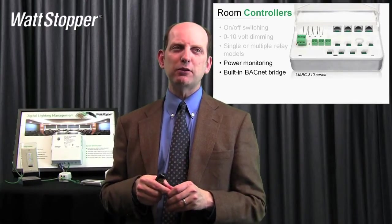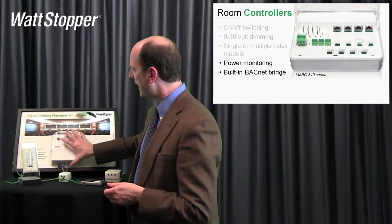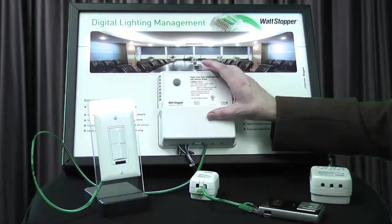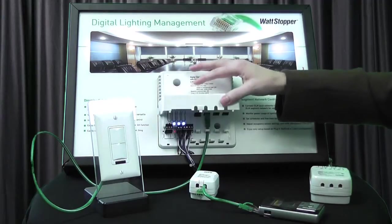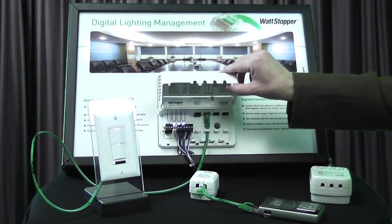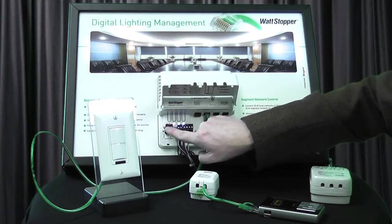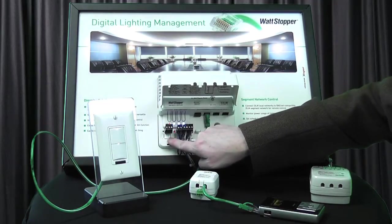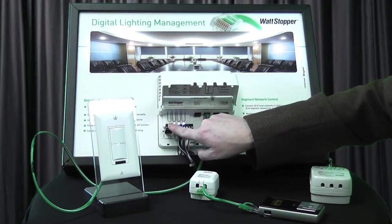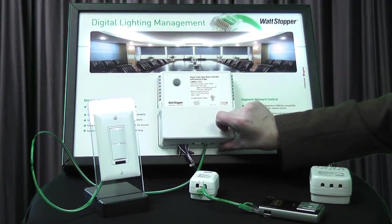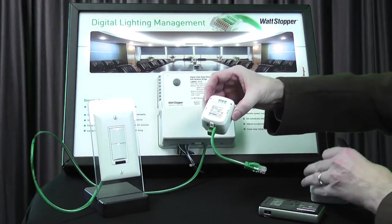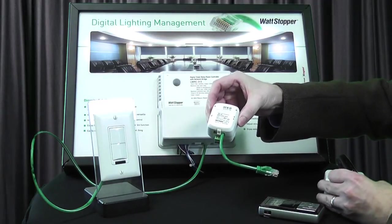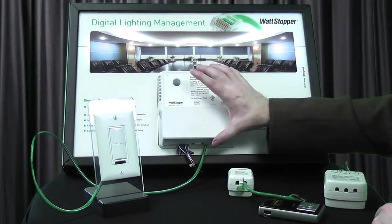Let's now talk a little bit about the room controllers. On the 300 series room controller, we were talking about the fact that it has on/off capability through its relays and zero-to-ten volt dimming capabilities. Two things to point out: on the 300 series there is a network bridge that's built in, and that's what this set of terminals is for. Here's where an integrator would bring their BACnet MSTP communication wire to talk to this device. Alternatively, there's a separate module that would normally go with something like an LMRC 102 or a 200 series, but with the 300 series you get that built in.